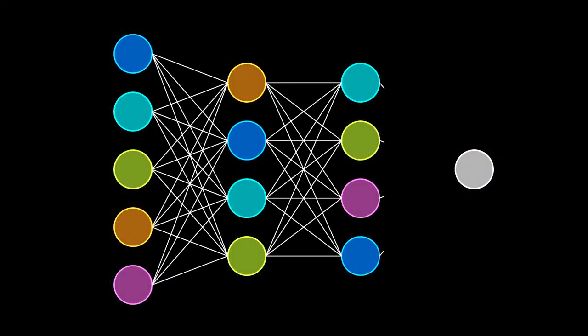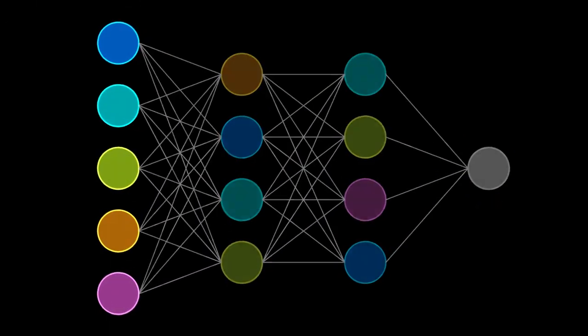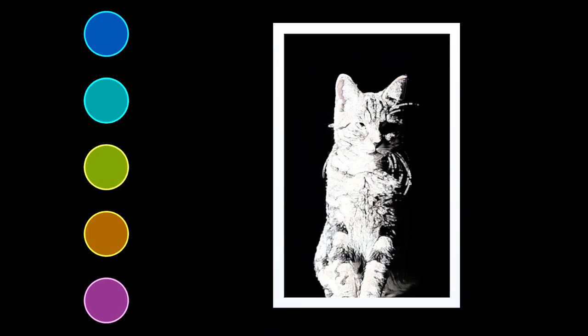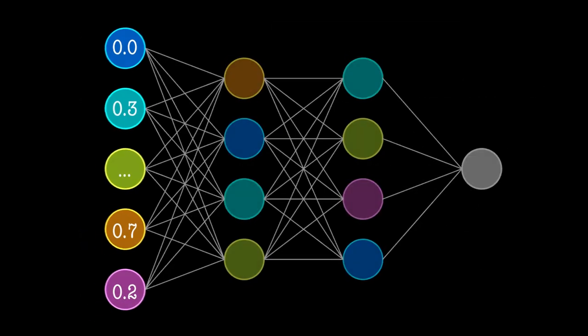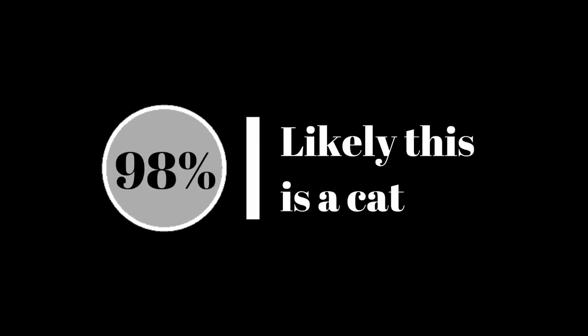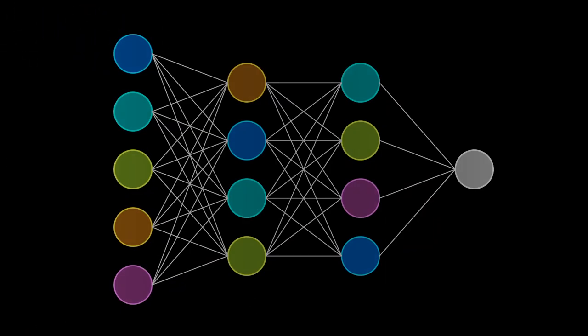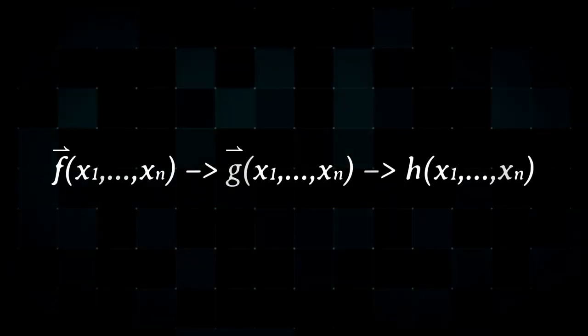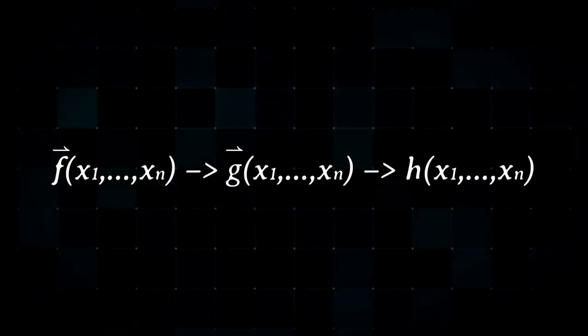Each dot in the network is called a neuron. The leftmost neurons contain information directly collected from the pixels of an image. The rightmost contains the computer's response. How do we get to that response? By running the information through the middle neurons, which are nothing more than mathematical functions.